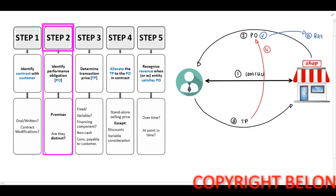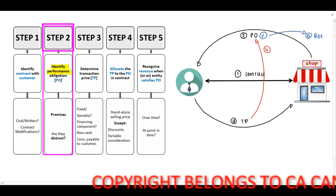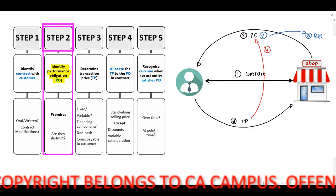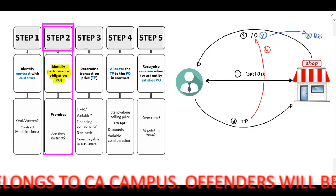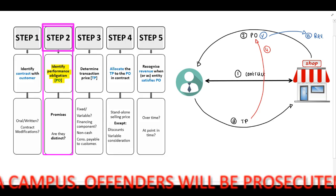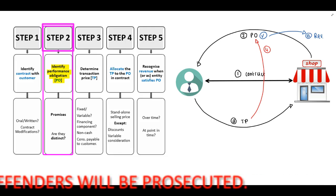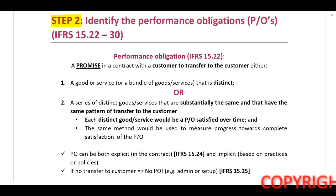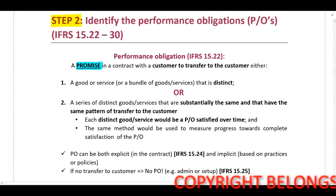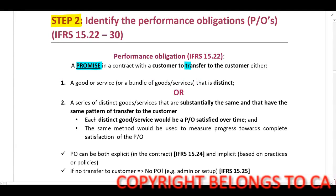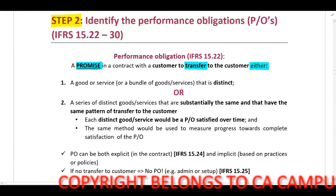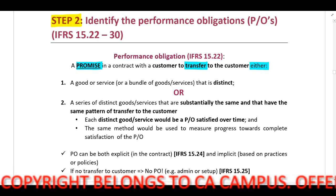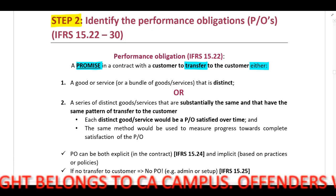Step two: we need to identify our performance obligation. I'm going to make use of our lecture notes to explain this step, so please refer to your lecture notes. A performance obligation is a promise in a contract with a customer to transfer to the customer either one good or service that is distinct.